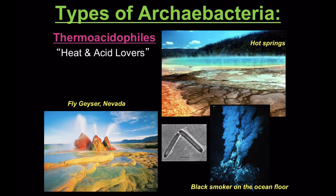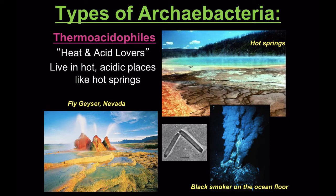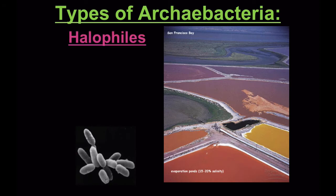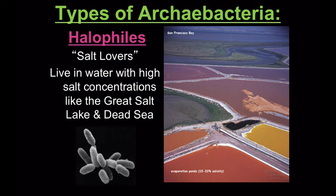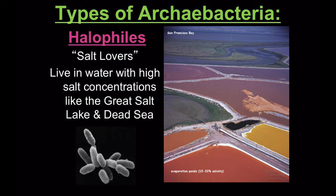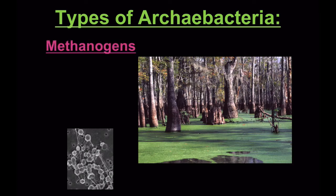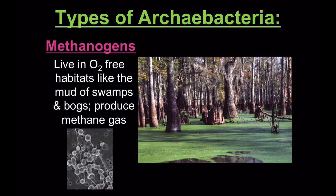Types of archaeobacteria include thermoacidophiles — thermo means heat, acidio means acid, and phile means to love — and they live in hot, acidic places like hot springs. Halophiles are salt lovers that live in water with high salt concentrations like the Great Salt Lake and Dead Sea. Methanogens live in oxygen-free habitats like the mud of swamps and bogs, and they produce a really smelly gas called methane.